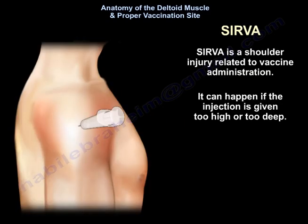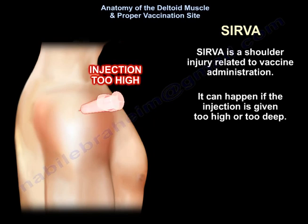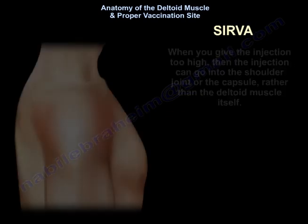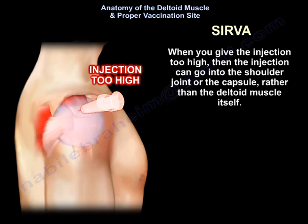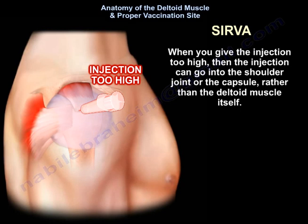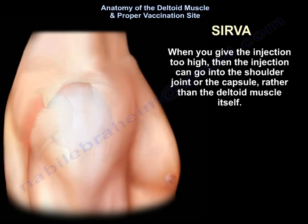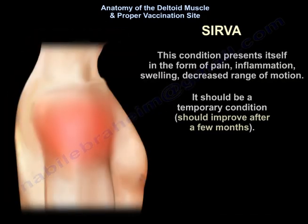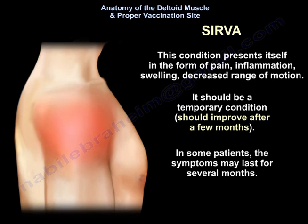SIRVA stands for shoulder injury related to vaccine administration. It can happen if the injection is given too high or too deep. When the injection is too high, it can go into the shoulder joint or the capsule rather than the deltoid muscle itself. This condition presents with pain, inflammation, swelling, and decreased range of motion. It should be a temporary condition that improves after a few months, though in some patients the symptoms may last for several months.